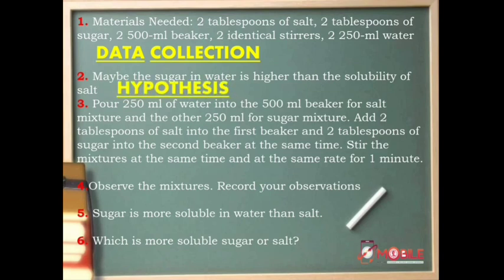Next, number three: pour 250 ml of water into the 500 ml beaker for salt mixture and the other 250 ml for sugar mixture. Add two tablespoons of salt into the first beaker and two tablespoons of sugar into the second beaker at the same time. Stir the mixtures at the same time and at the same rate for one minute. So obviously, since you are performing an experiment, then the answer is experiment. Next, number four: observe the mixtures, record your observations. So you are already analyzing, the answer is analysis.